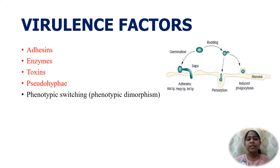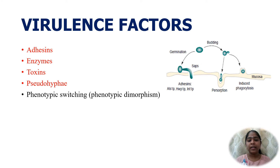Pseudohyphae: the presence of pseudohyphae indicates active infection. Phospholipase released from the hyphal tip may help in invasion, though this is not yet fully proved. Candida albicans has a unique ability to transform between three phenotypic forms in the tissue: the yeast form (blastospore), pseudohyphae, and true hyphae. This property is known as phenotypic switching or phenotypic dimorphism.